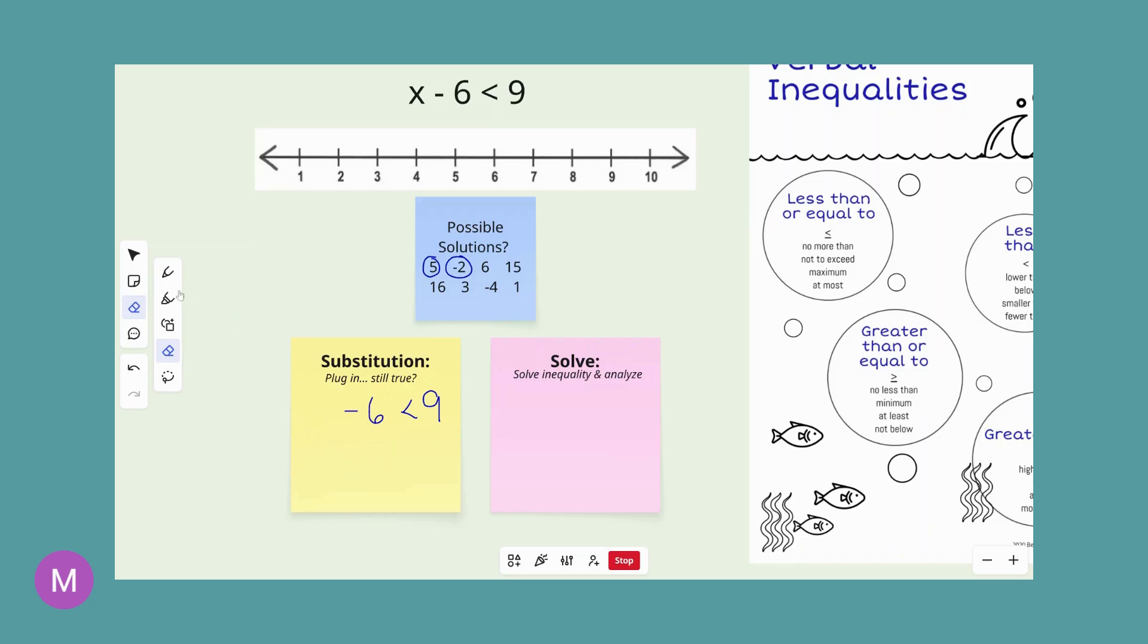Let's try 6. 6 minus 6 is 0. Is that less than 9? Yes, it is. So we have another solution here. How about 15? 15 minus 6, that is 9. Is that less than 9? No. So this one, we do not have a true statement. 9 is not less than 9, 9 is equal to 9. If we had had this symbol, less than or equal to, we could say yes, but because that's missing in this inequality, it is not a solution. So 15 does not work.